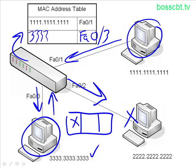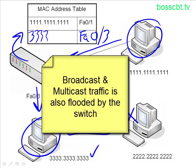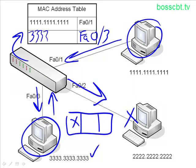It's also important to note that in addition to unknown unicast frames, there are two other types of frames that are flooded out all ports on a switch. The first is a broadcast frame, which is meant for everything within a particular subnet or VLAN. The second is a multicast frame, which is destined to usually a subset of devices on the network. Both broadcast and multicast traffic are flooded out multiple ports on a switch, so in addition to unknown unicast, those two types are also included when you talk about flooding frames.